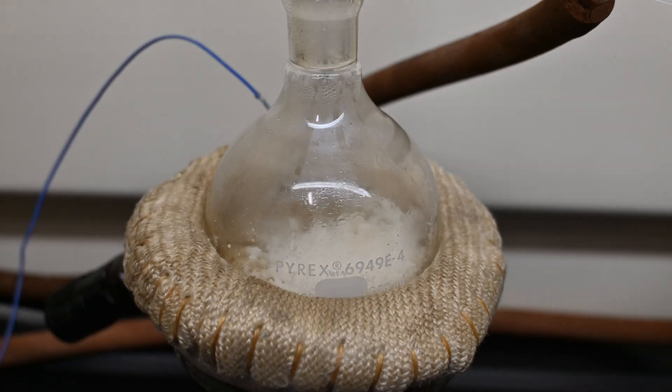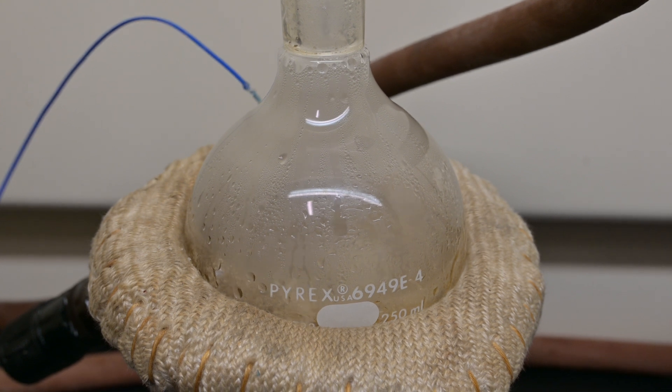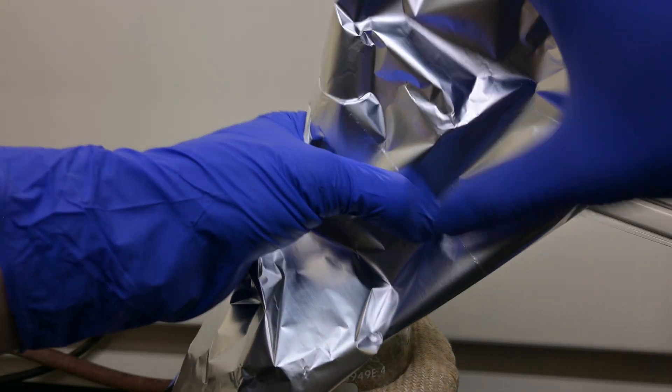Once hot enough, vapor started coming off the polystyrene. It was having some trouble coming over the distillation adapter, so I wrapped it with aluminum foil to keep more heat in.